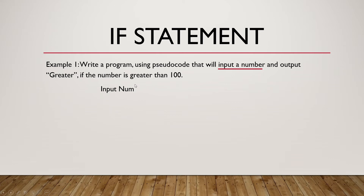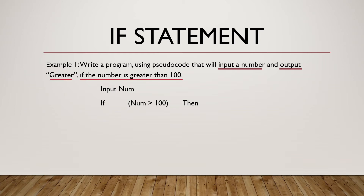Then we are going to make a selection checking if this number is greater than 100, using the if statement: IF num > 100 THEN output 'greater'. So if our number is greater than 100, then the output of 'greater' will be produced. Since we have nothing else to do, we are going to end the selection after output greater with END IF.